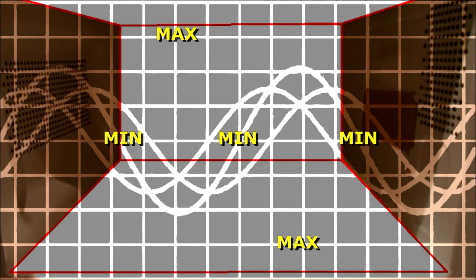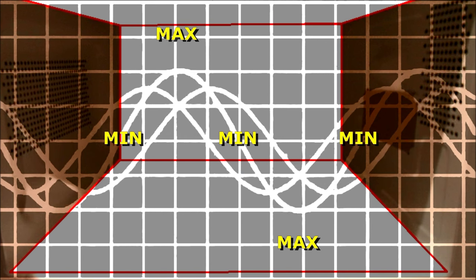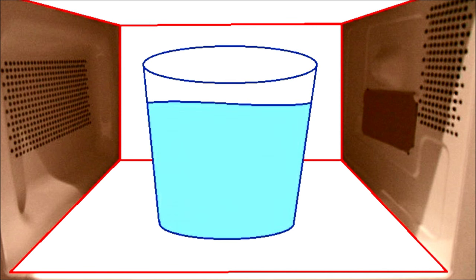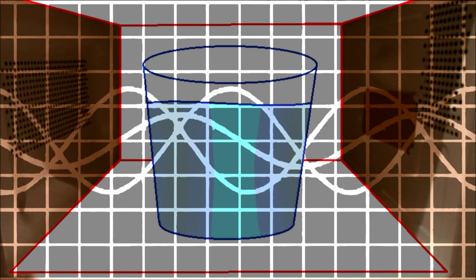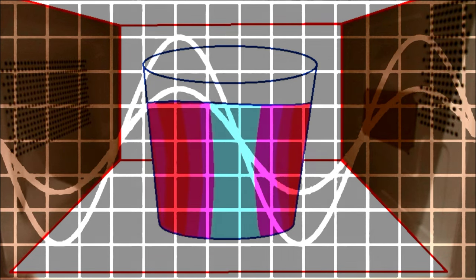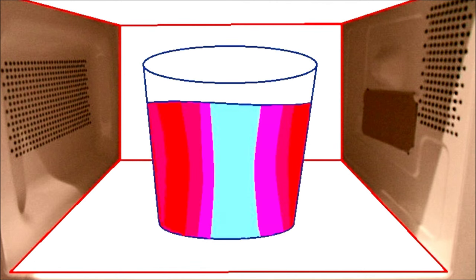And so as you heat up food in there, the maximum areas are going to receive more heat energy. Water is excellent at absorbing microwave radiation. That's why we use the frequencies that we do for microwaves. It's perfect for water to absorb. And as you heat up water, it's going to heat unevenly if it's not on one of those rotating platforms. They incorporated the rotators so that way we could heat our food a little bit more evenly.